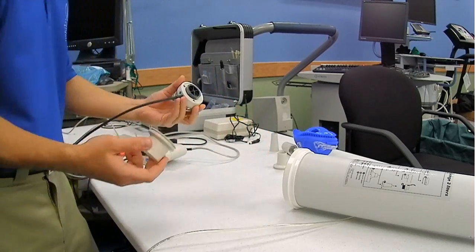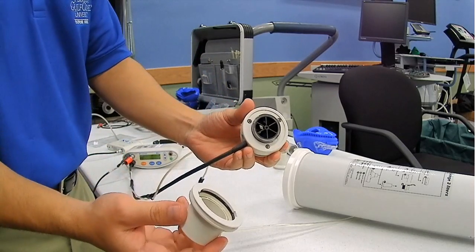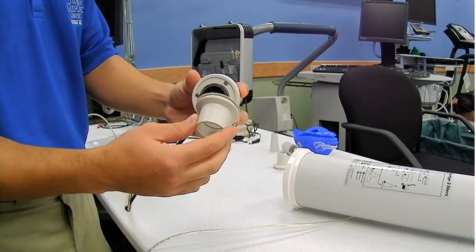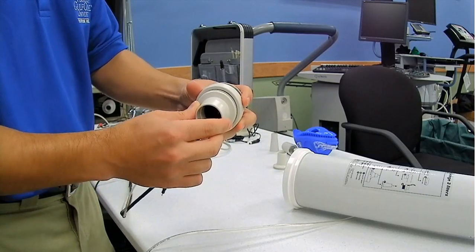Here's a video on how to calibrate the turbine. As you saw earlier, you're going to use the adapter. This adapter is for the 3 liter syringe.